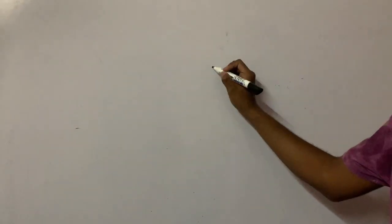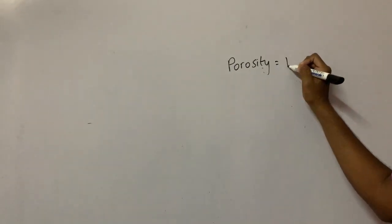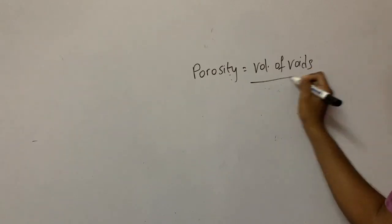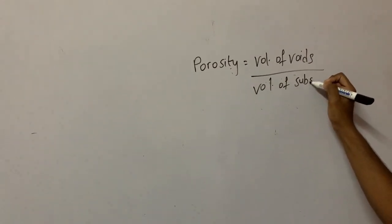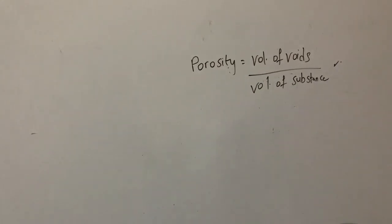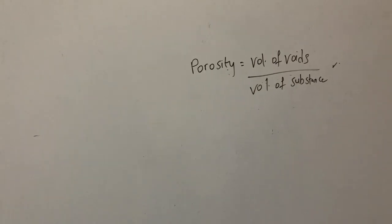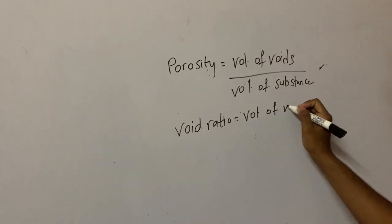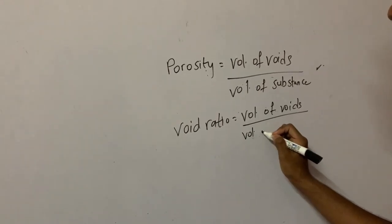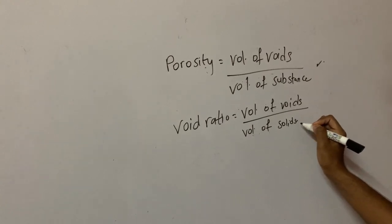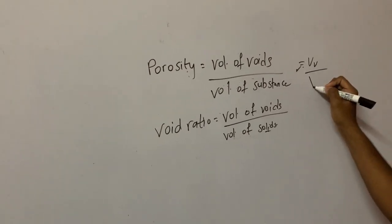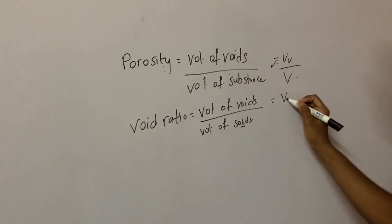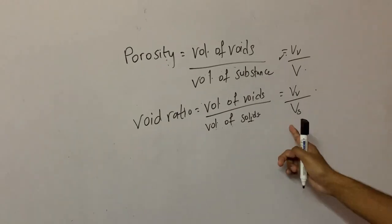Now I am going to discuss about porosity. Porosity is defined as the volume of voids to the total volume of the substance. So porosity equals volume of voids divided by total volume of the substance. Next, void ratio is defined as the volume of voids to the volume occupied by solids. So the difference is: porosity uses total volume in the denominator, while void ratio uses the volume occupied by solids.